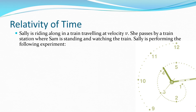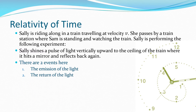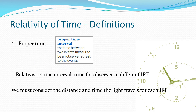Let's look at an example. Sally's riding on a train travelling at a velocity. She passes a train station where Sam is standing watching the train, and Sally performs an experiment — she shines a pulse of light vertically up to the ceiling where it hits a mirror and reflects back down again. Sally and Sam will both see this, but they are not in the same inertial reference frame, so they will see different things. T₀ is proper time, and T is the relativistic time for an observer in a different inertial reference frame. The proper time is always going to be shorter than the relativistic time.